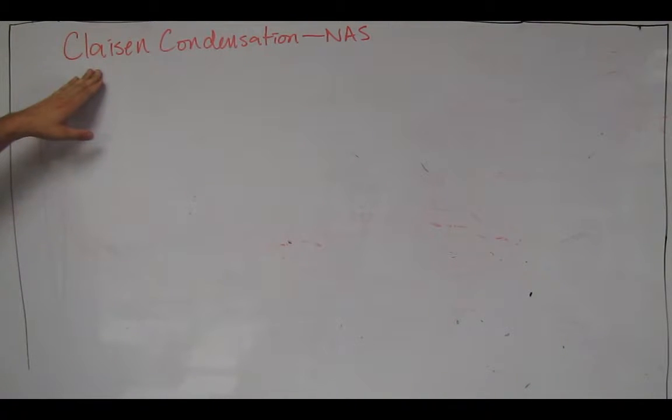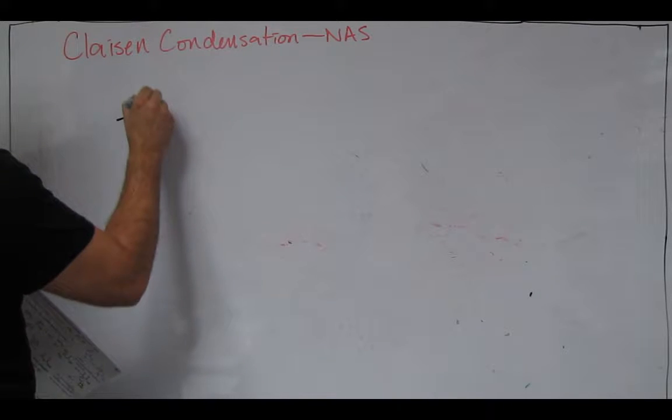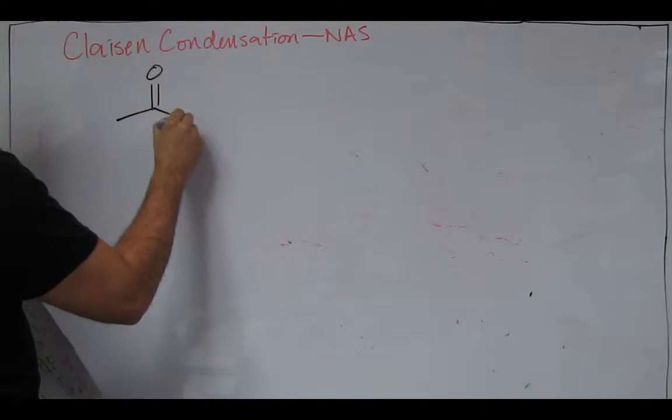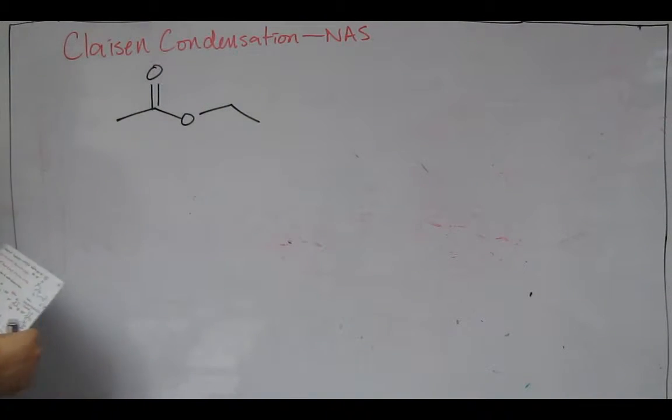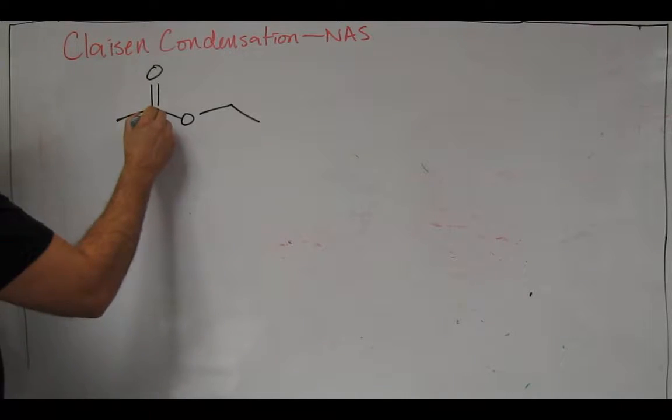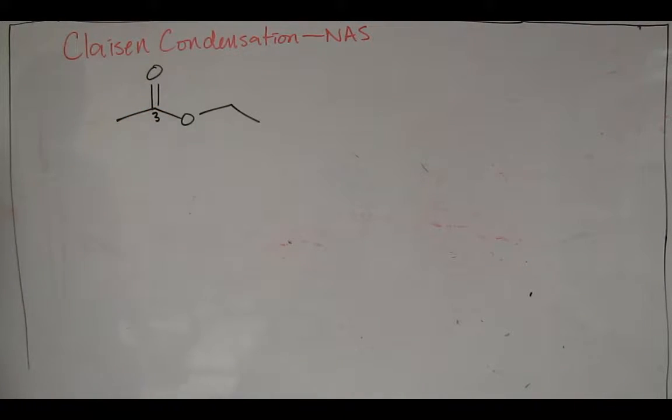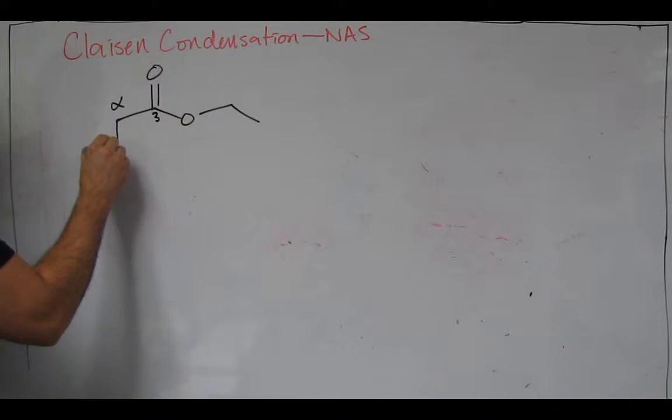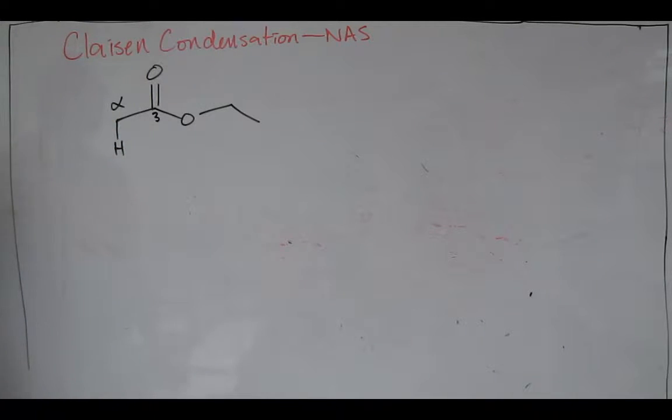The first example that we're going to look at, let's start with ethyl acetate. We're starting with our ester. We recognize this is an oxidation state three compound. It has an alpha carbon and it has three alpha protons.